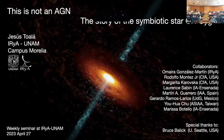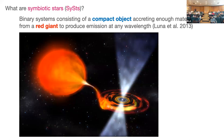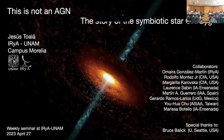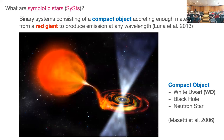What are symbiotic stars? Symbiotic stars are anything in a binary that contains a compact object that accretes enough material from a red giant in order to produce any emission. This is a very loose definition of a symbiotic star, defined in 2013. If you think further, the definition might include white dwarfs, stellar black holes, and neutron stars. There are some symbiotic stars with neutron stars and stellar black holes that have been detected.